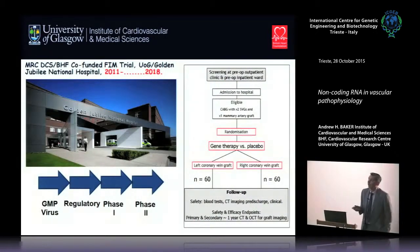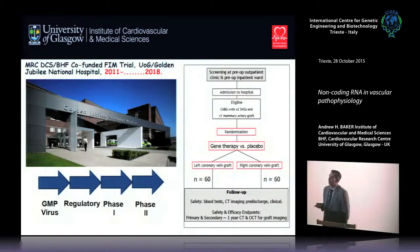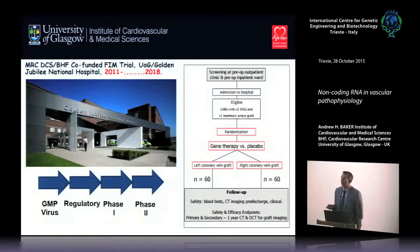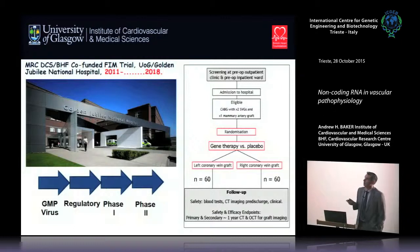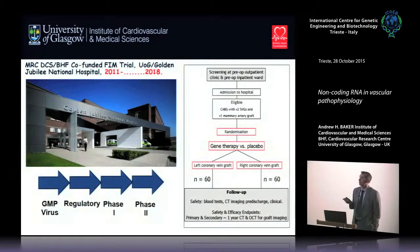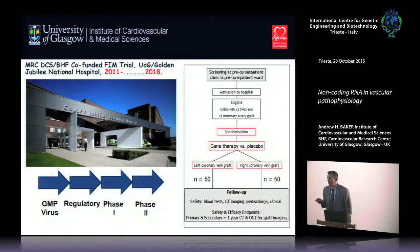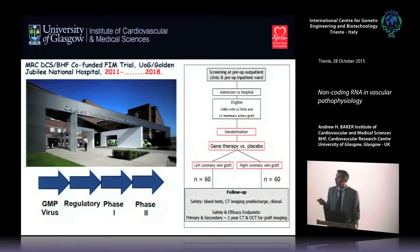We are funded to do a clinical trial at the Golden Jubilee National Hospital in Glasgow — a single-center trial making GMP virus. This has proved hugely difficult since TIMP3 is a toxic transgene. The phase two design is neat: patients receive three bypass grafts; the main arterial graft serves as control, and left and right coronaries are randomized within-patient to gene therapy or placebo in 120 patients. We'll use optical coherence tomography to measure graft remodeling at one year, with phase one safety data hoped for by end of 2016.